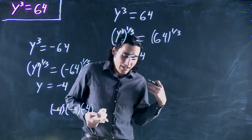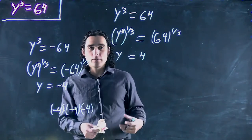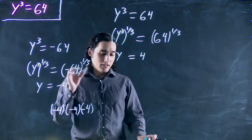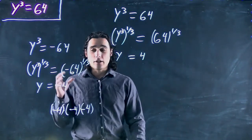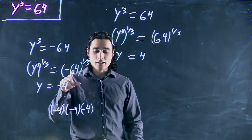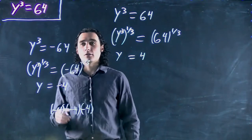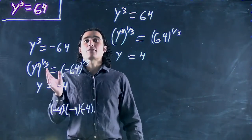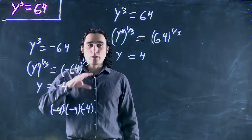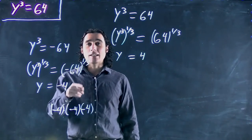If we're ever taking the root of a number and it's an odd number, so the 5th root, the 3rd root, the 7th root, the 99th root, whatever number we get will have the same sign as the original number.